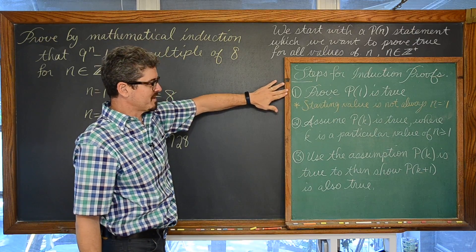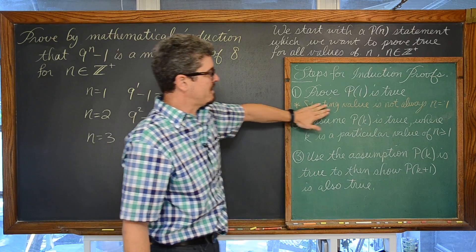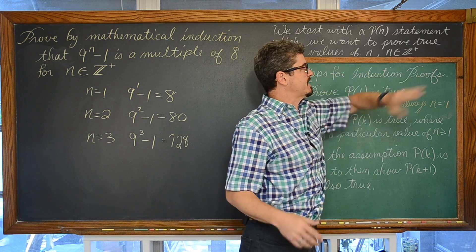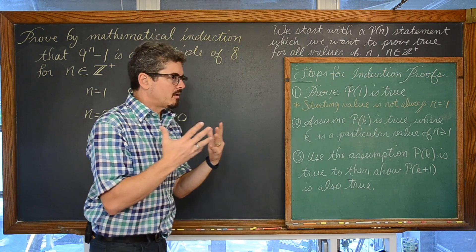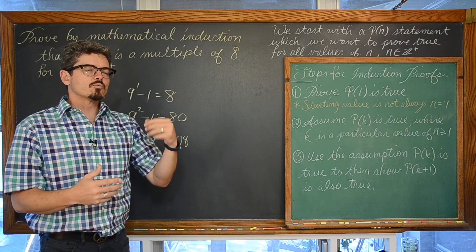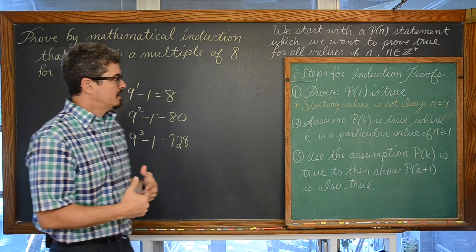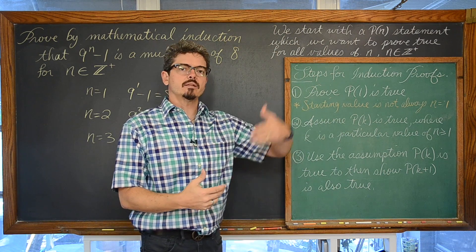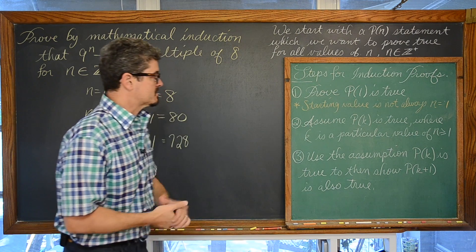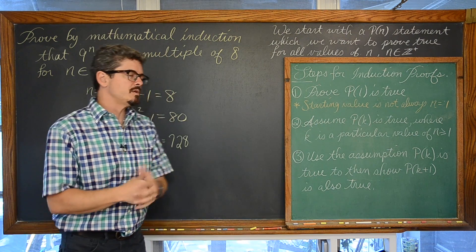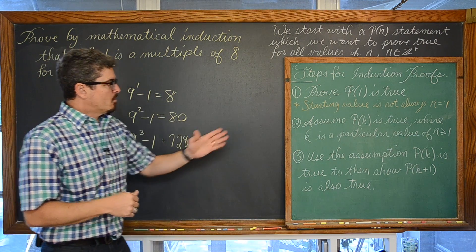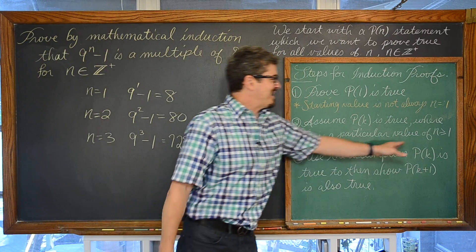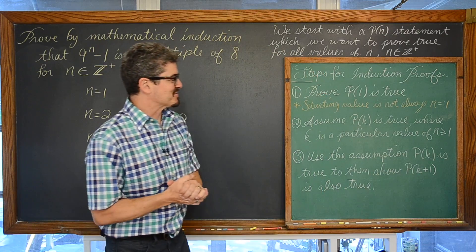We are then going to prove that p of 1 is true. Your starting value — we say n is within the set of positive integers — but our first initial value doesn't necessarily have to be 1. It might be such that the statement starts where n is equal to 3 and goes on from there: 3, 4, 5, 6, and so on. So our initial value is not always equal to 1, but it usually is. We are then going to assume that p of k is true, where k is a particular value of n greater than or equal to 1.